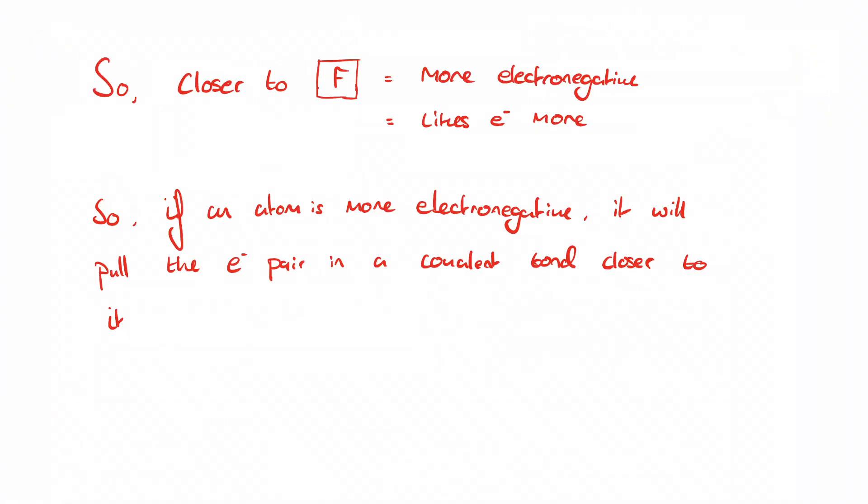If we have an atom that likes electrons more than the one it's covalently bonded to, i.e. is more electronegative, it's going to pull the electrons closer to it. As the definition says, the power of an atom to attract electrons in a covalent bond. The best way to think of it is like a tug of war.